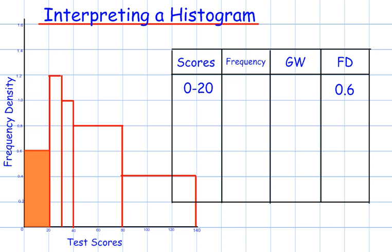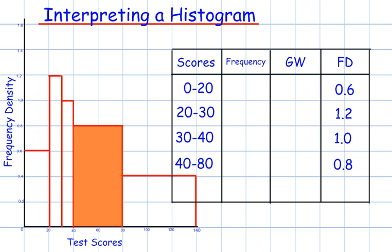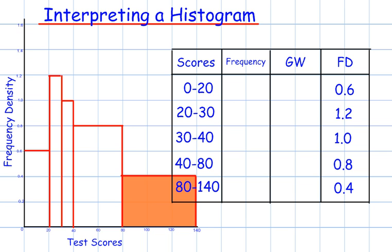Using the first bar you can see that from 0 to 20 has a frequency density of 0.6, 20 to 30 has a frequency density of 1.2, 30 to 40 has a frequency density of 1, 40 to 80 has a frequency density of 0.8, and 80 to 140 has a frequency density of 0.4.